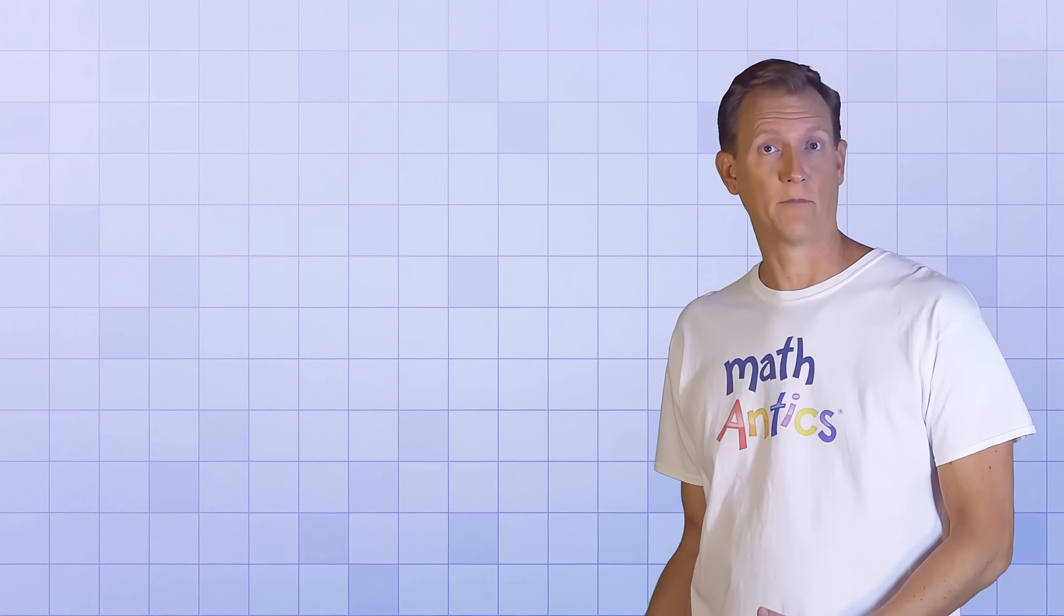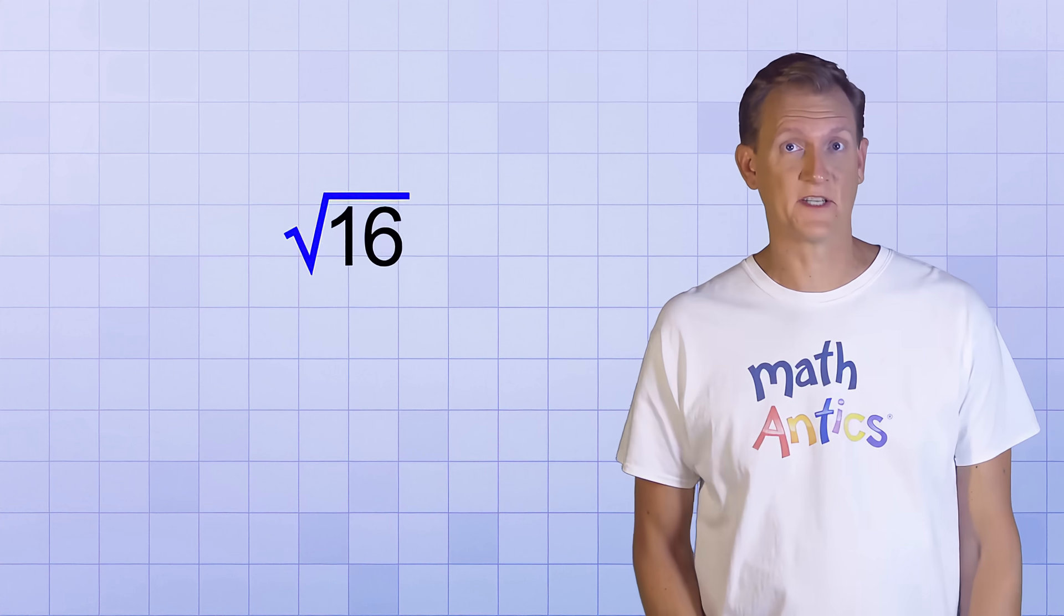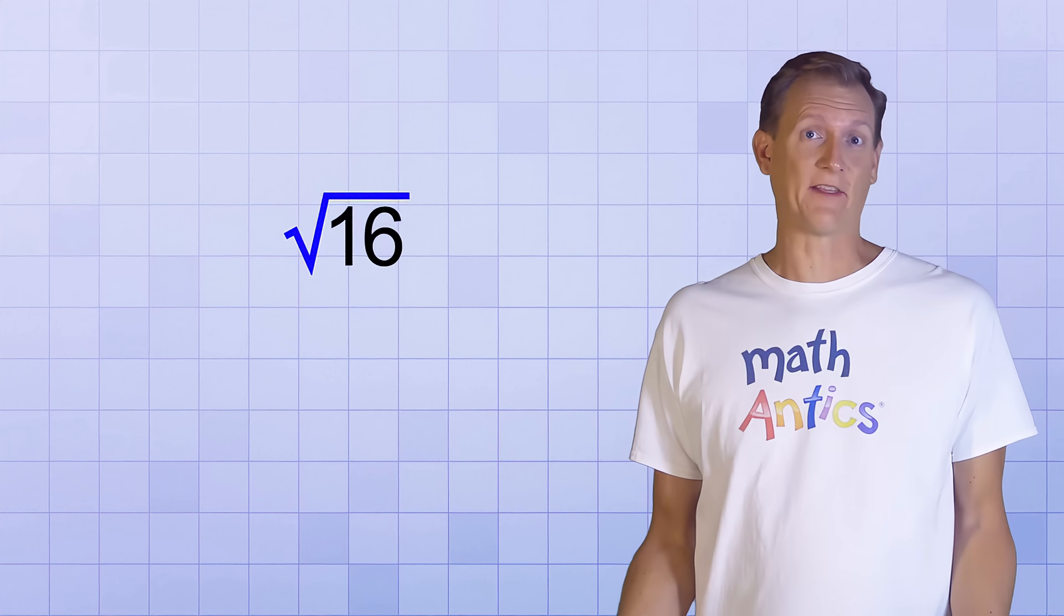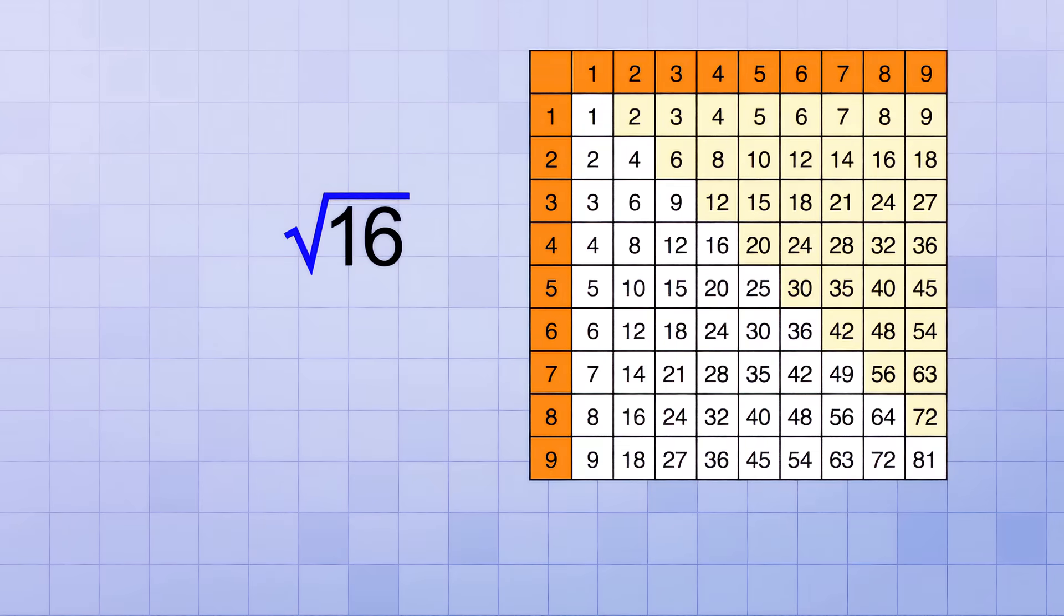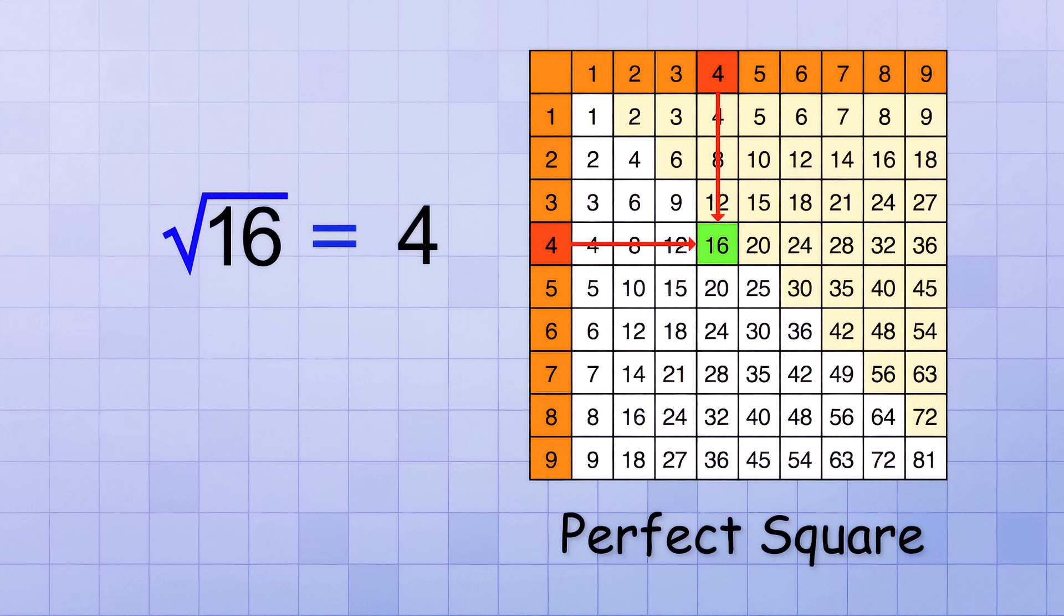So let's suppose you do a math problem and get the answer, the square root of 16. You could just leave it like that and it wouldn't be wrong, but can you think of a simpler way to write it? Of course! 16 is a perfect square. It equals 4 times 4, so the square root of 16 is just 4. That's definitely a simpler answer.